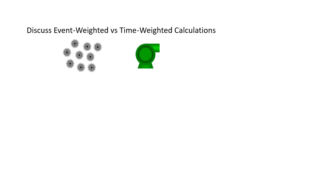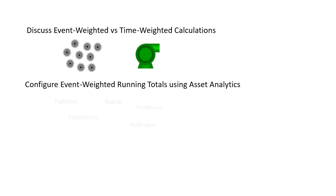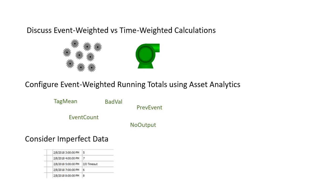This video will focus on the event-weighted scenario, but there is a separate video linked for the time-weighted case. We'll finish up by discussing how imperfect data such as IO timeouts or shutdown events affect our result, and we'll come up with a second, more robust solution.